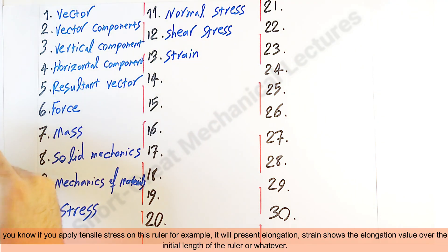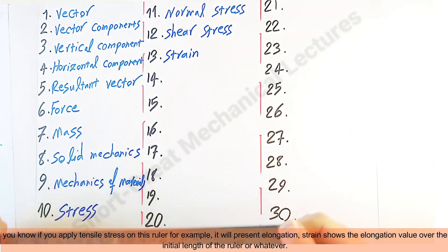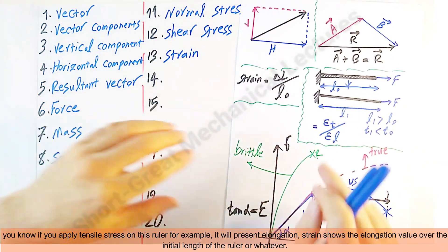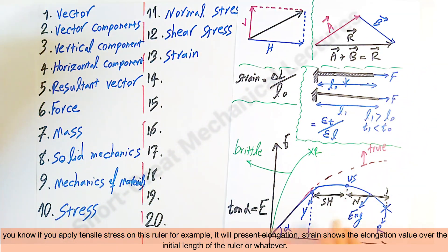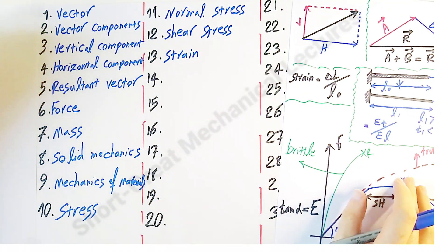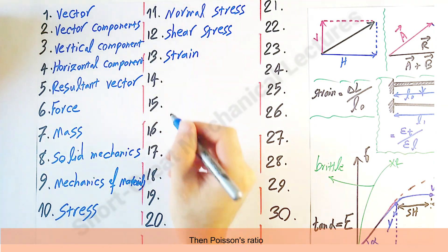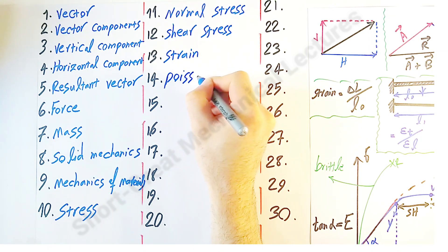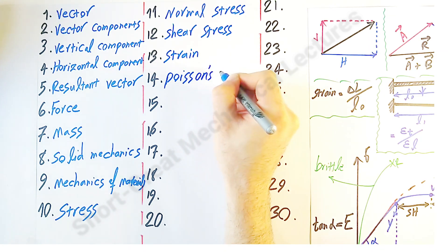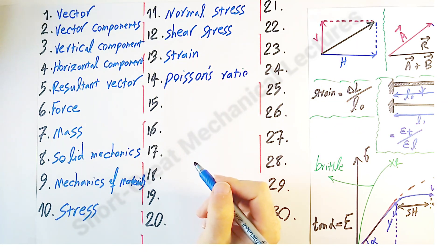If you apply tensile stress on this ruler, for example, it will present elongation. Strain shows the elongation value over the initial length of the ruler. Then 'Poisson's ratio.'